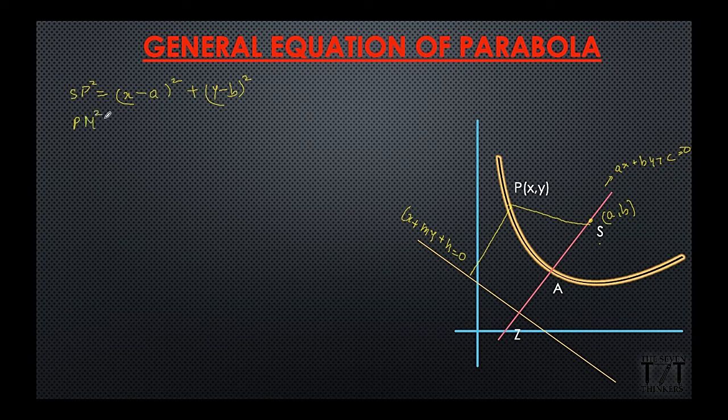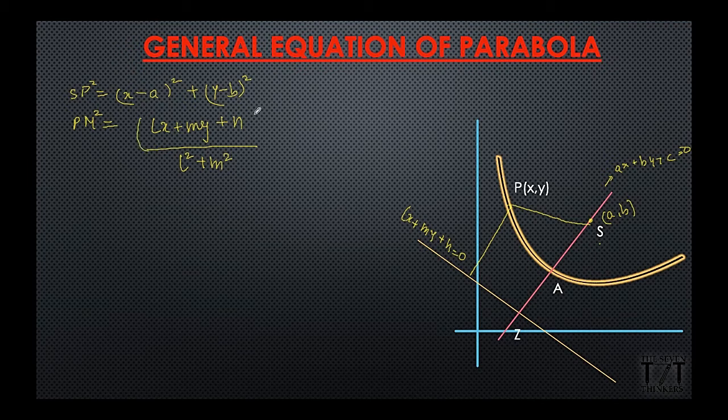The perpendicular distance formula we're going to apply over here. Since x and y will be put in this equation, so lx plus my plus n whole mod l square plus m square, no roots since we have squared both the sides and this will also be squared.